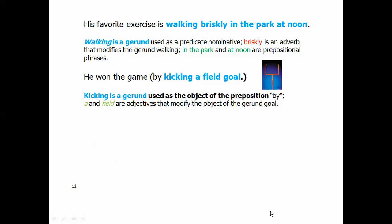His favorite exercise is walking briskly in the park at noon. Now here the gerund phrase follows a linking verb, so it's being used as a predicate nominative. Walking is the gerund, briskly is an adverb that modifies the gerund that tells you how he's walking, and in the park and at noon are prepositional phrases that tells you where and when he is walking.